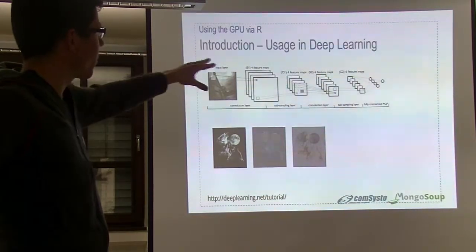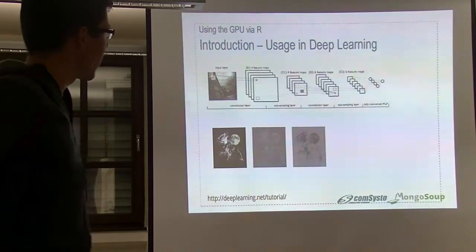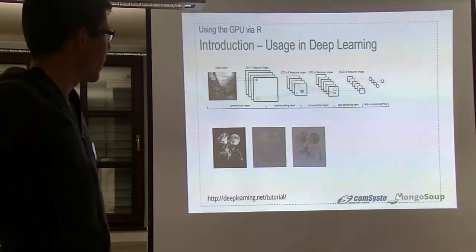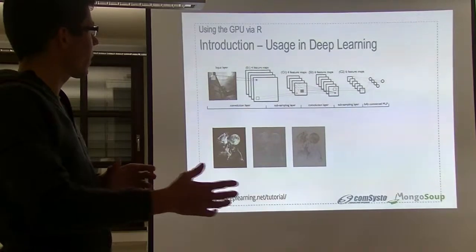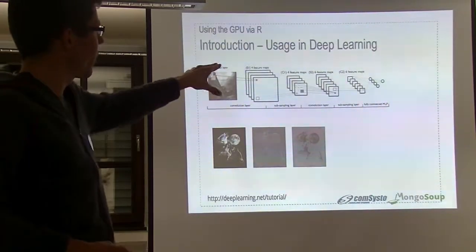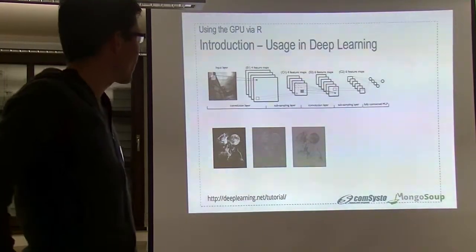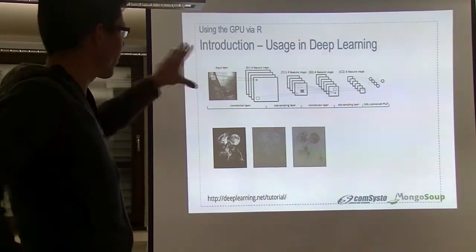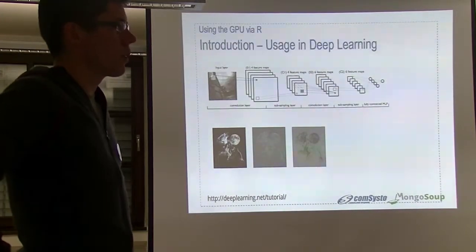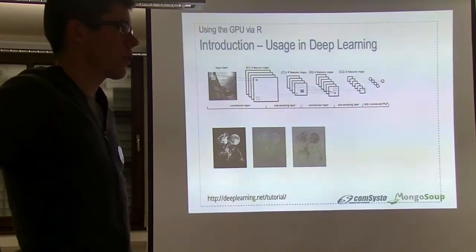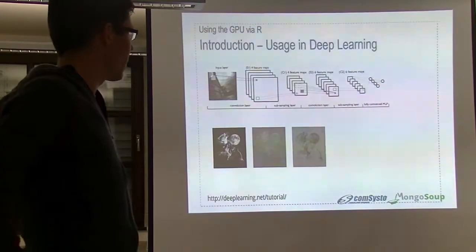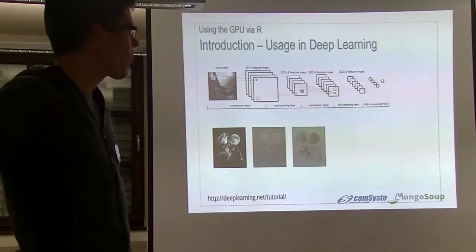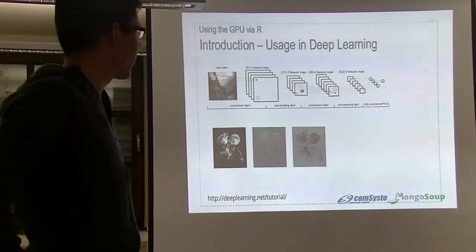The picture becomes smaller and smaller, and after all, you have maybe a representation a tenth of the original picture. In deep learning, you can reconstruct back to the original picture from that small representation. This all uses deep learning and neural networks, which do a lot of matrix multiplications — operations really well-suited for the GPU. So it's a big improvement to use the GPU because it's really fitted to neural networks.